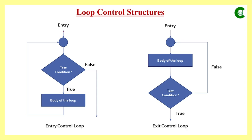As you can see in this flowchart, when the program control arrives, we check a test condition. When the result of that test condition is true, the program executes the body of the loop. If it is false, the control comes out of the loop and whatever statement we have after that loop is then executed.